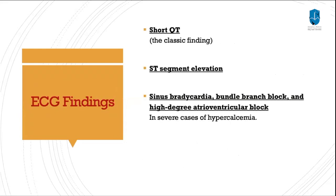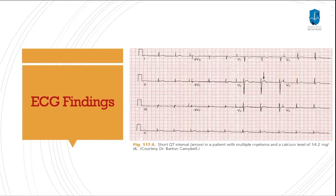Regarding ECG findings in hypercalcemia, the classical finding is a shortened QT interval and ST segment elevation. We can also see sinus bradycardia, bundle branch block, and high-degree atrioventricular block in severe cases. This ECG example shows the shortened QT interval in a patient with multiple myeloma and a calcium level of 14.2.